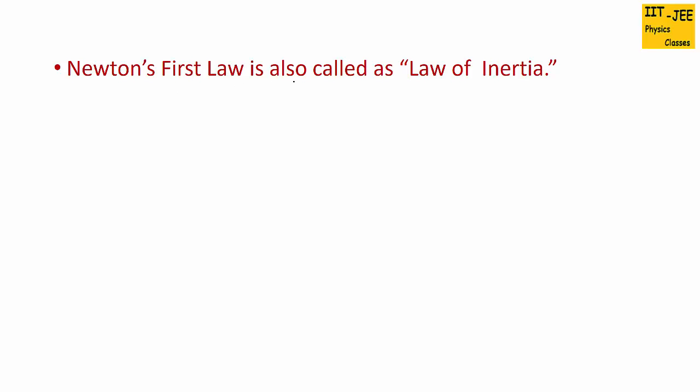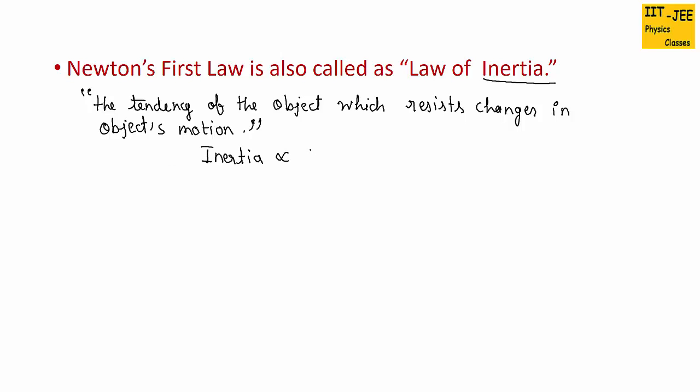Newton's first law is also called the law of inertia. Here, inertia is the tendency of the object which resists changes in the object's motion. This is the definition of inertia. Inertia is actually directly proportional to mass. More mass means more inertia. A heavier object which has more mass will be harder to change its state of motion. A heavier object would have more inertia, or you can also say it's hard to change the state of motion of a heavier object. That means we need more force to make a heavier object move.